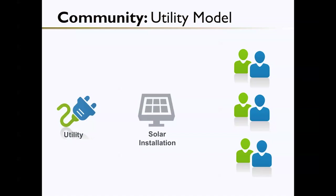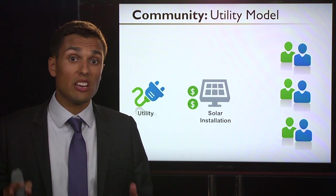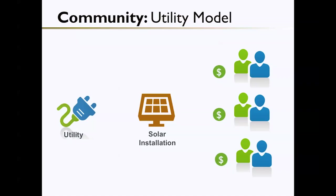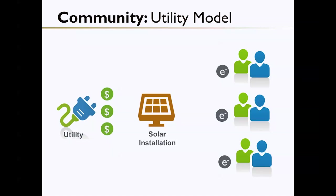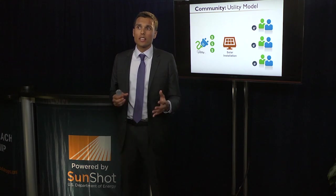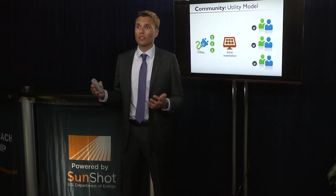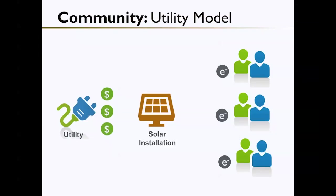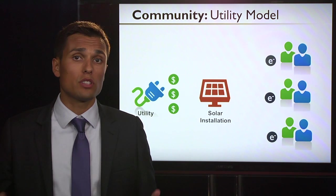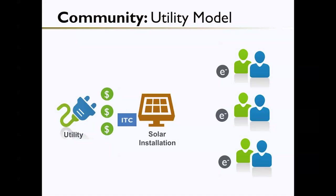Under the Utility Model, the utility is the one to collectively invest in the solar installation. Individual homeowners can then purchase shares of the installation from the utility, and just like the Special Purpose Entity Model, they can receive the electricity benefits from that installation. The advantage here is that the utility is directly involved and can administrate the whole process — crediting your electricity bill based on the amount of electricity produced depending on how many shares you own. One drawback is that the utility can't actually take the investment tax credit.